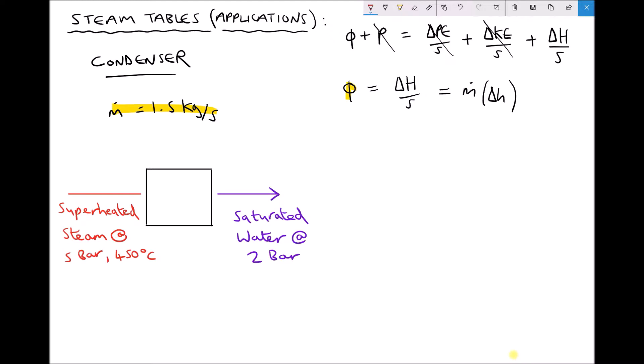For the steam entering the condenser, we have superheated steam at 5 bar and 450°C, so we use the steam tables to determine enthalpy H at those conditions. At the exit we have saturated water at 2 bar, so H equals HF at 2 bar. We'll use the steam tables to determine both values — first the enthalpy of steam entering at 5 bar and 450°C, then the enthalpy of saturated water exiting at 2 bar.